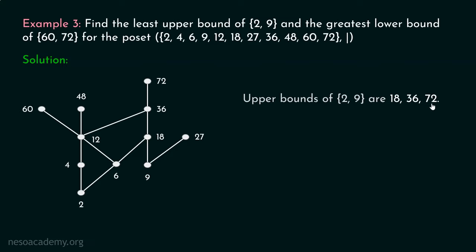We have seen this already in our previous presentation: upper bounds of 2 and 9 are 18, 36, and 72. Now out of these upper bounds, we have to find the least upper bound. We know that 18 is the least upper bound of 2 and 9, because 18 is related to every other upper bound — that is the definition of least upper bound. In the diagram also you can see that 18 is below every other element. Therefore, least upper bound of 2 and 9 is 18.